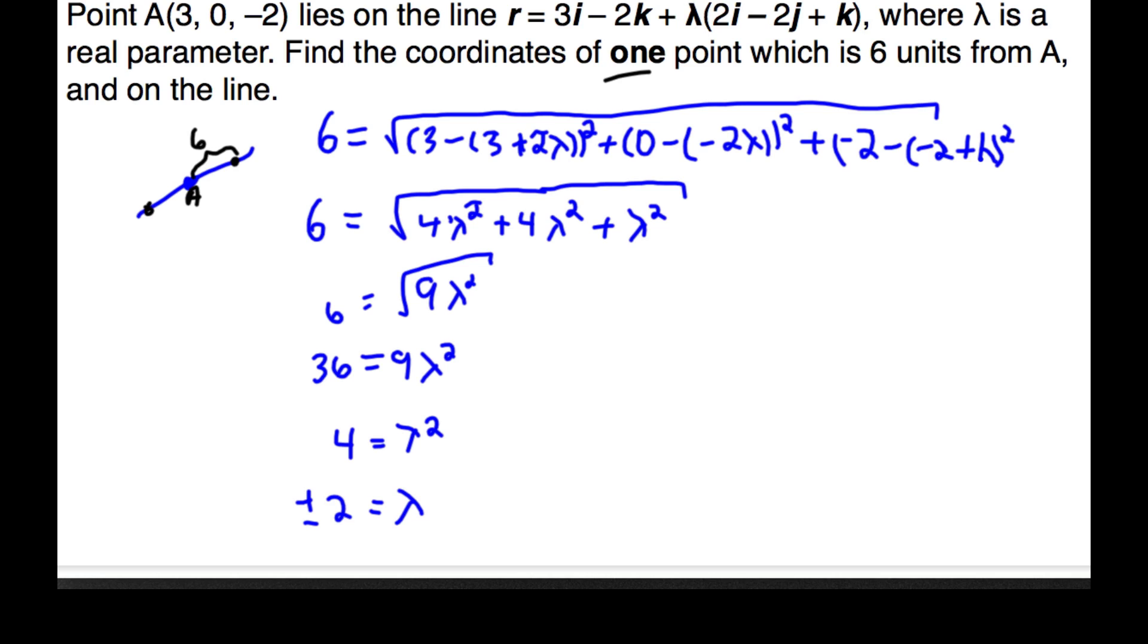When we put λ in here, we're going to get the point here. When we put negative 2 in, we're going to get the point here, both of which are a distance of 6. Now, you just need one.